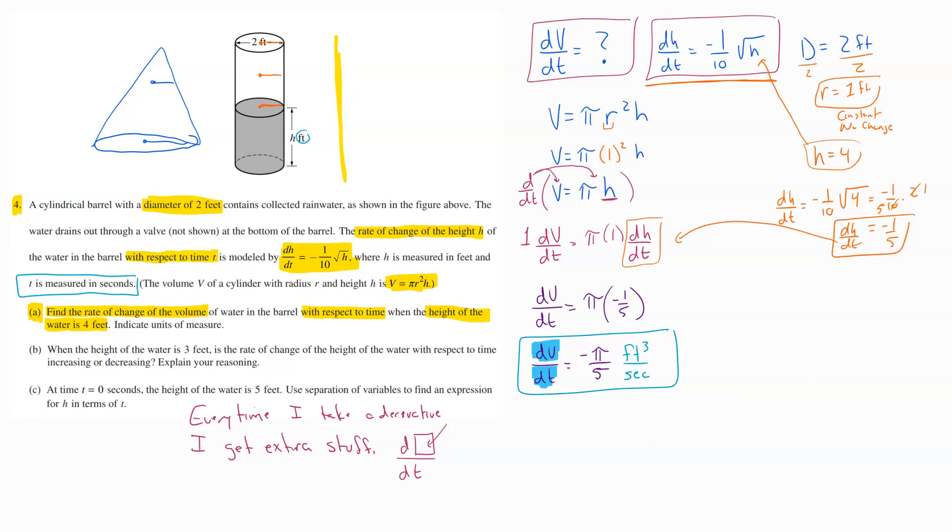And so here, we would get one point from getting out our proper derivative using our implicit differentiation, and then we'd get out a second point for getting our final answer with those units.